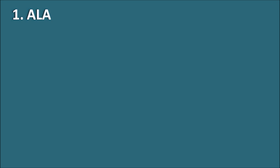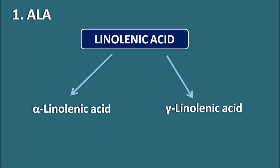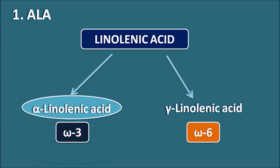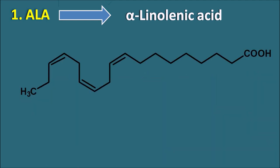Now let us look at the first omega-3 fatty acid: ALA. The LA indicates linolenic acid, but linolenic acid is present in two forms — alpha-linolenic acid and gamma-linolenic acid. Alpha-linolenic acid is an omega-3 fatty acid, whereas gamma-linolenic acid is an omega-6 fatty acid. The A in ALA indicates alpha, so ALA is alpha-linolenic acid, an omega-3 fatty acid. This is the structure of alpha-linolenic acid — it is a polyunsaturated fatty acid.